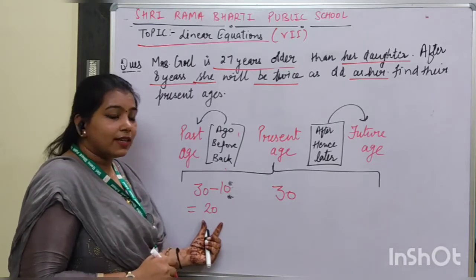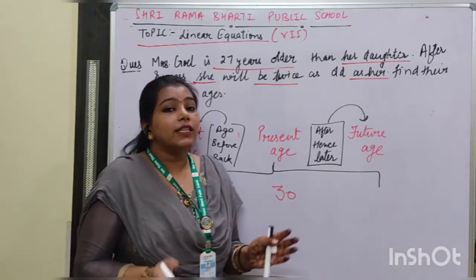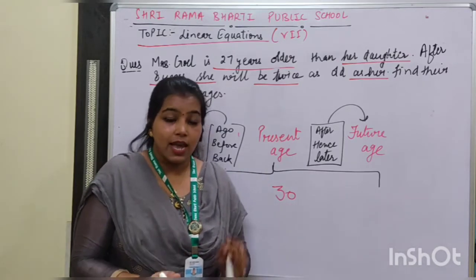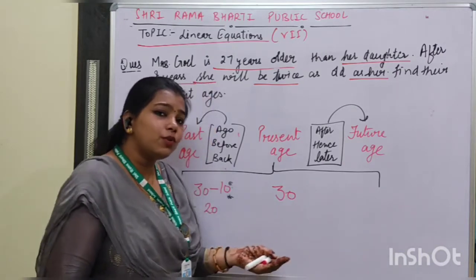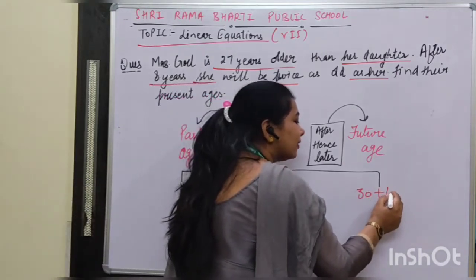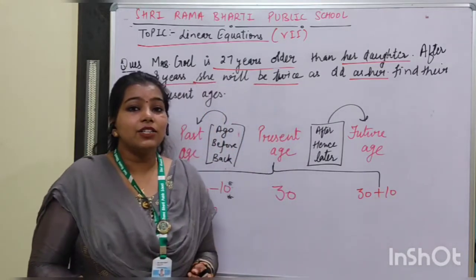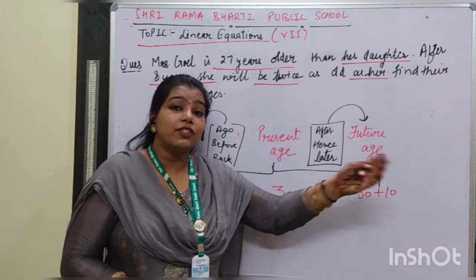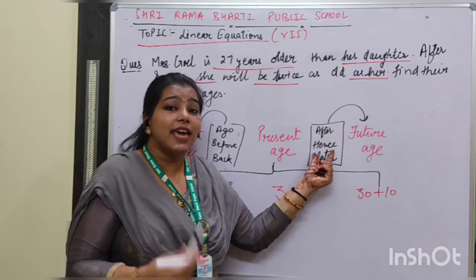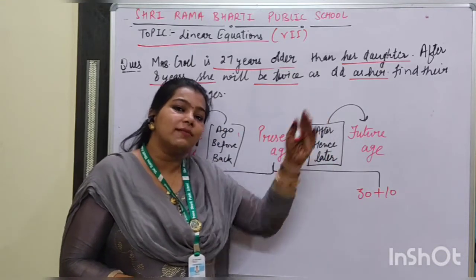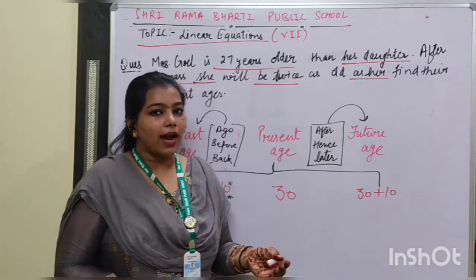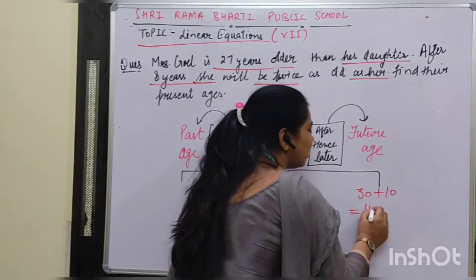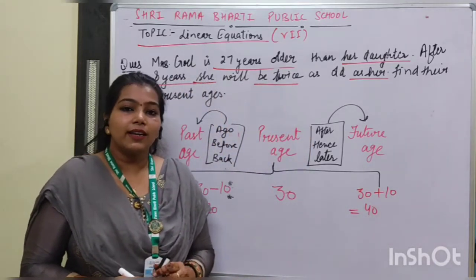On the other hand, if I ask you to find my age after 10 years from today, you will add. Why addition? Because when we talk about 'after 10 years,' '10 years later,' or '10 years hence,' it means my age is going to increase, and increase means to add. So we add to my present age and my age will be 40 years.